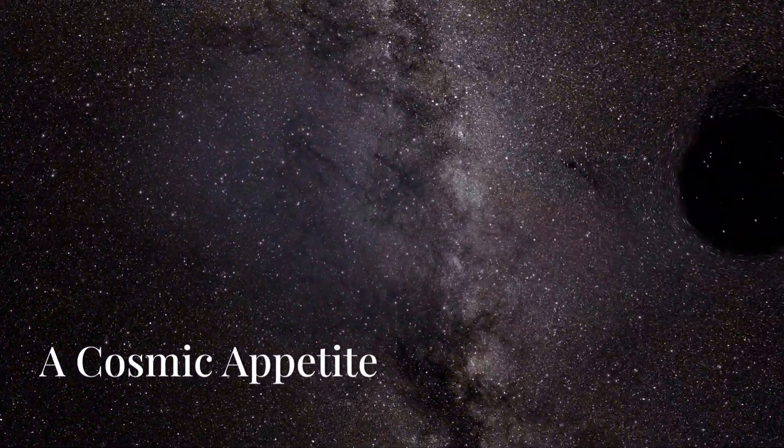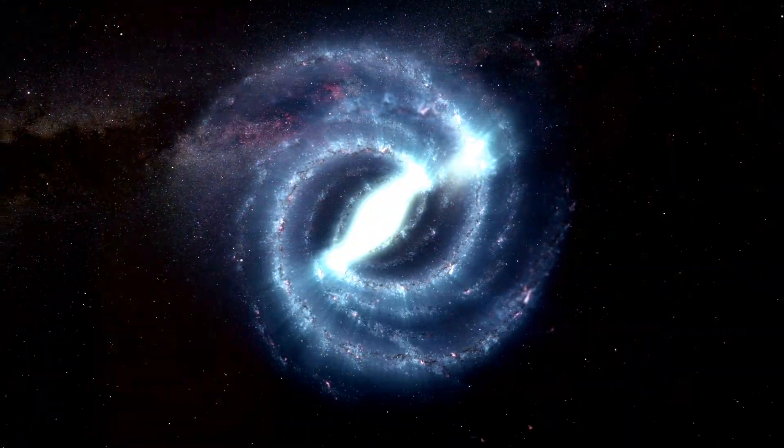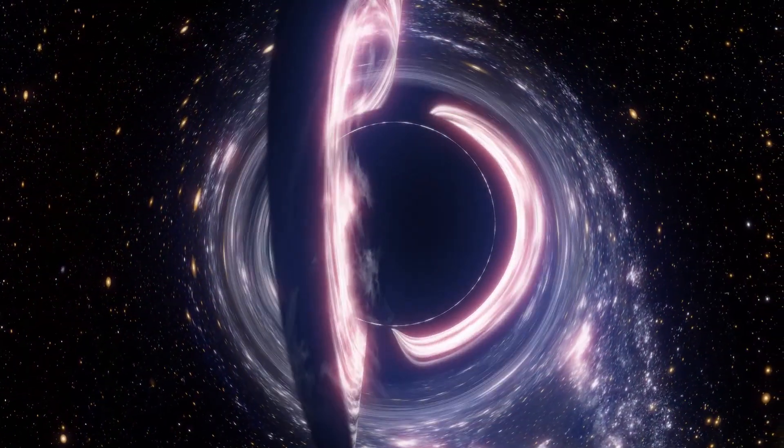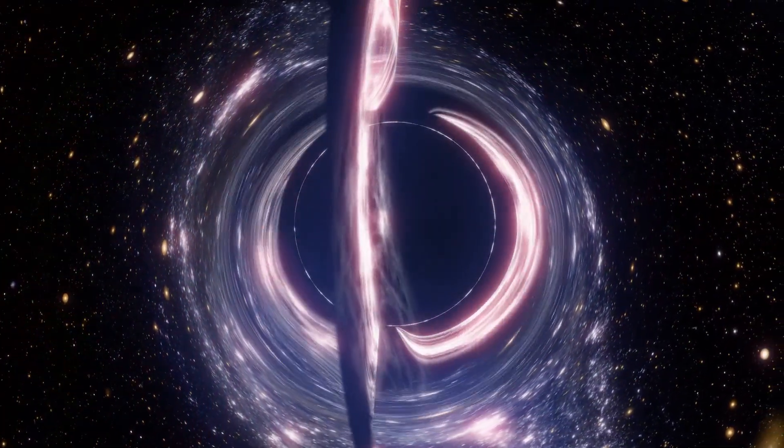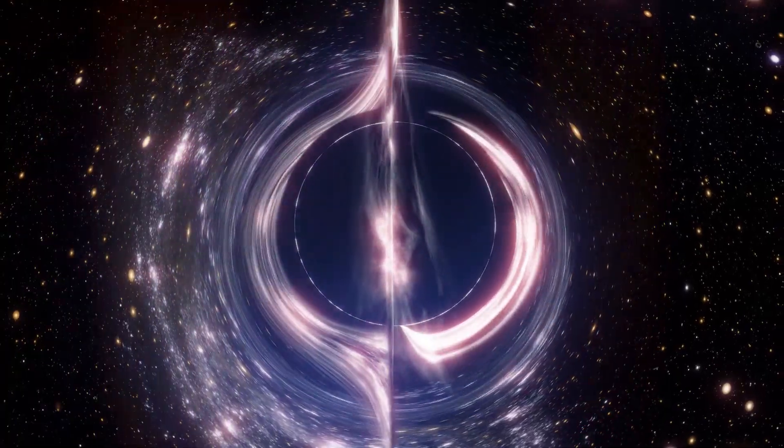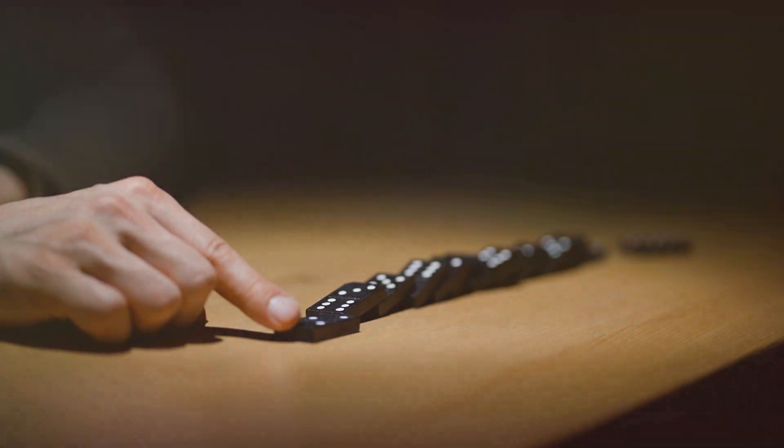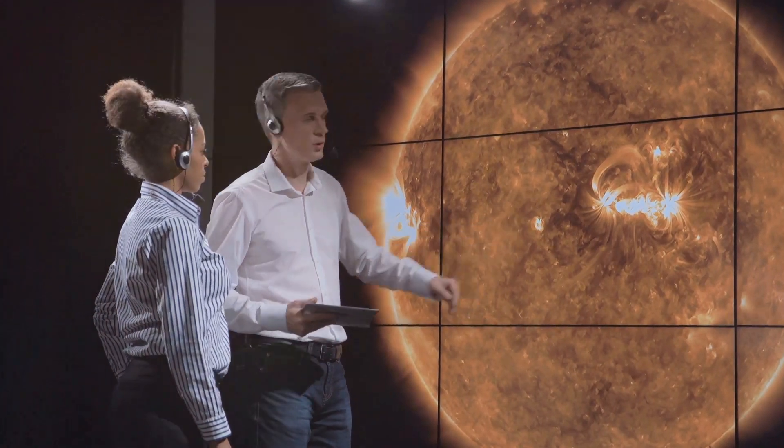Could this cosmic giant be a threat to our entire galaxy? Let's find out. How could a black hole threaten an entire galaxy? Galaxies are held together by a delicate balance of gravity. But a supermassive black hole can disrupt that balance, pulling in stars and even entire solar systems. Think about the effect of a bowling ball rolling through a carefully constructed domino display.